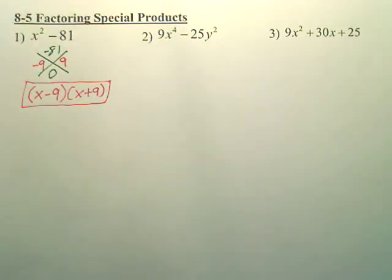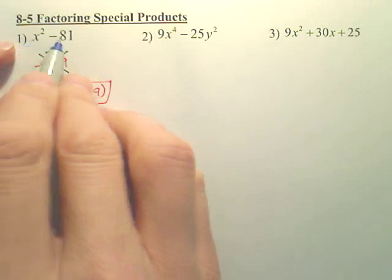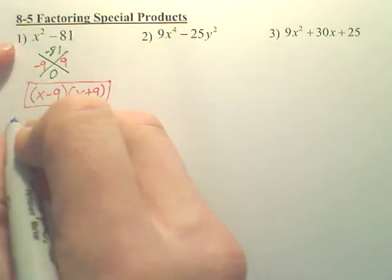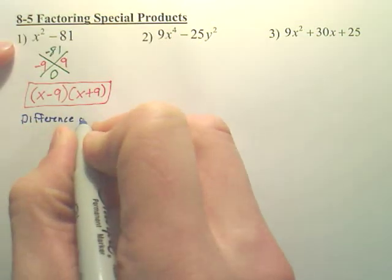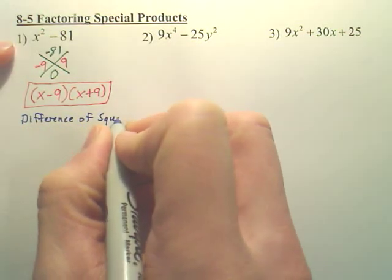That is a way of doing it. But there's a shortcut. And here's the shortcut. If you look at these two, this is called a difference of squares. A difference of squares.